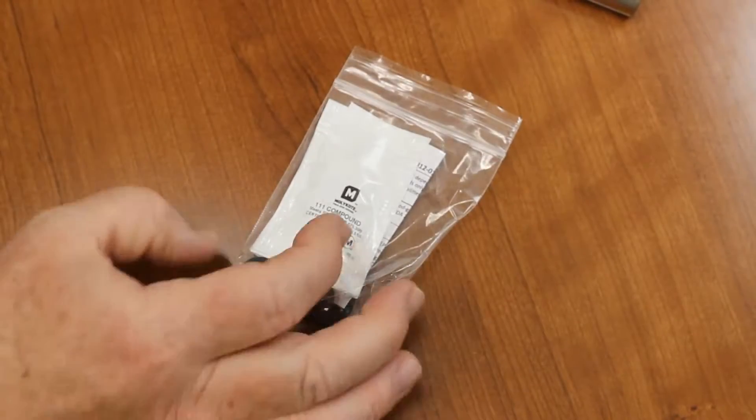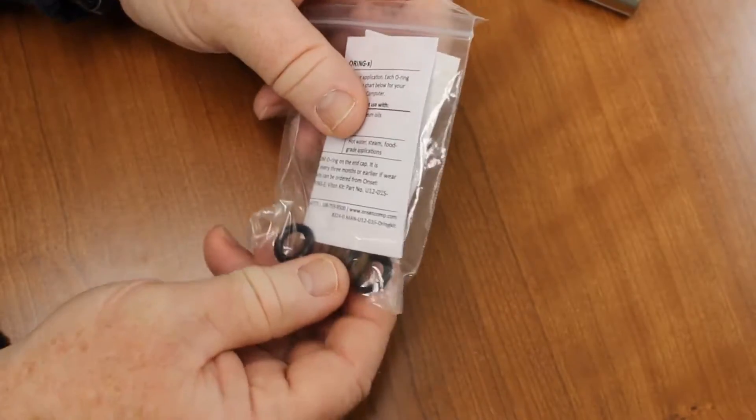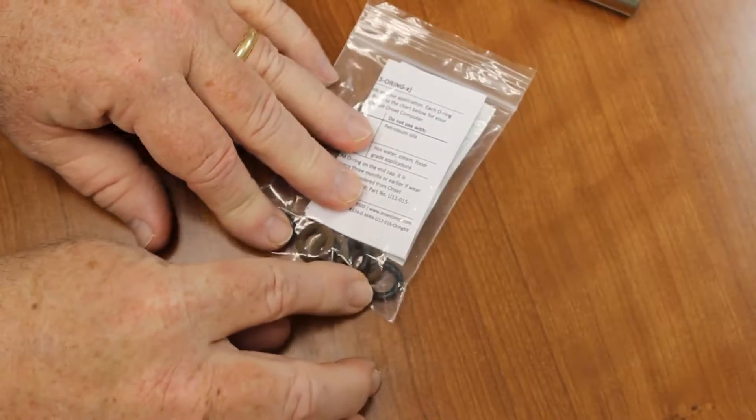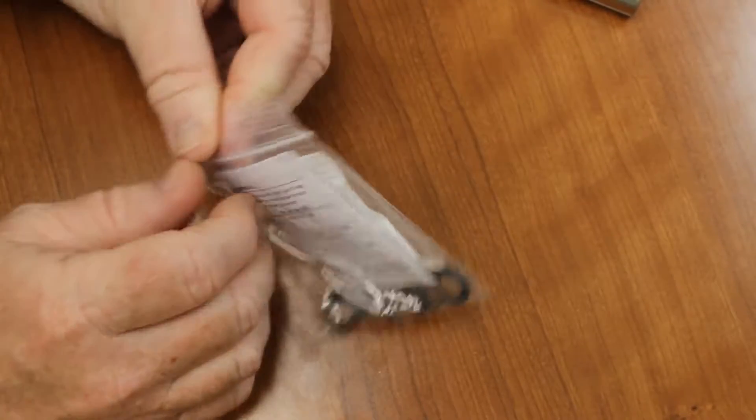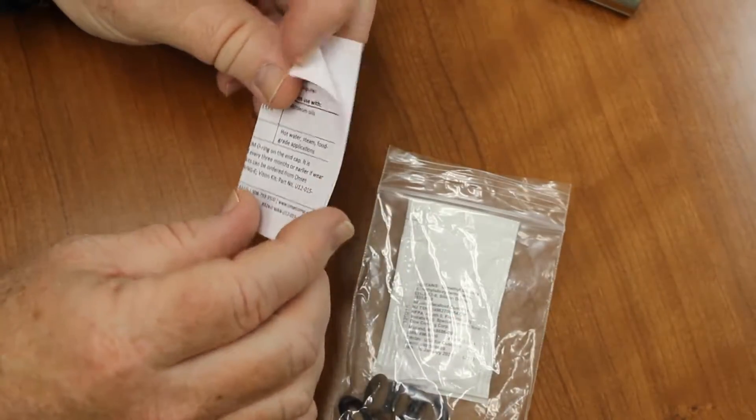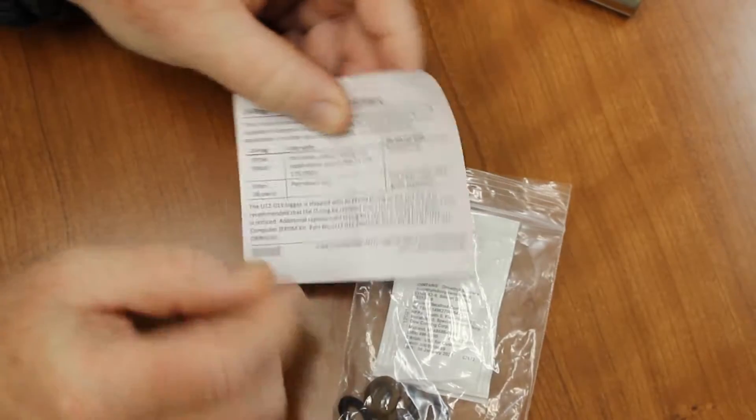The other thing that's included in the packaging are spare O-rings. I don't know if you can see the difference in color here. There are brown ones and there are black ones. There's a little instruction sheet that talks about the difference between these two types of O-rings.